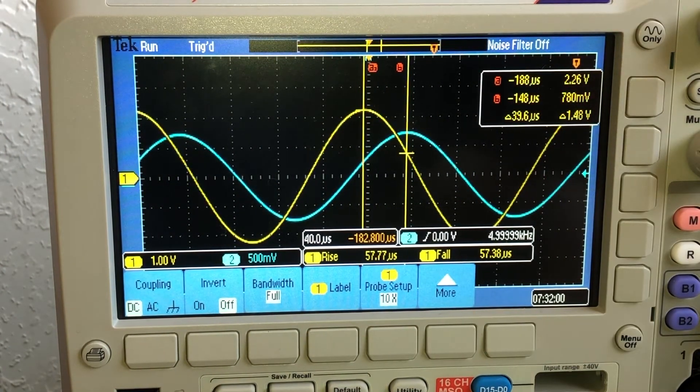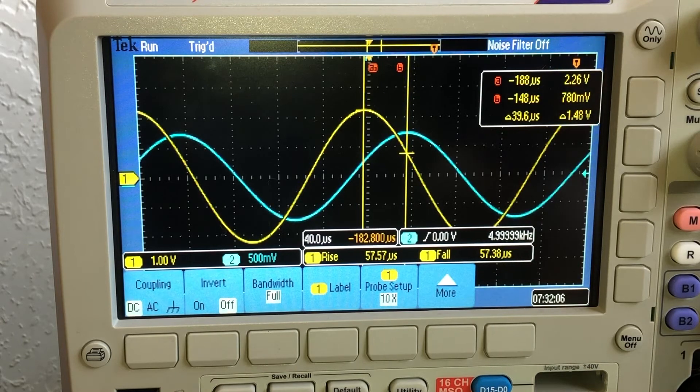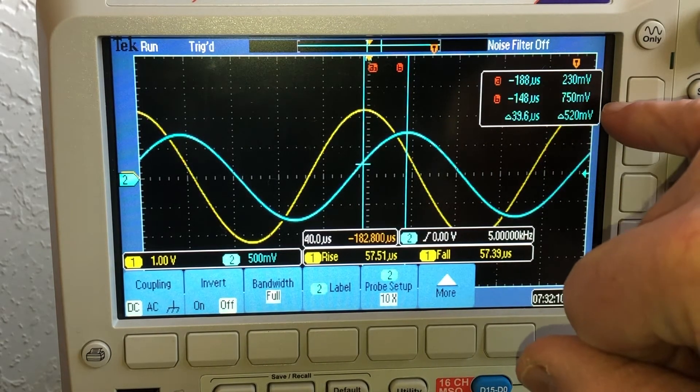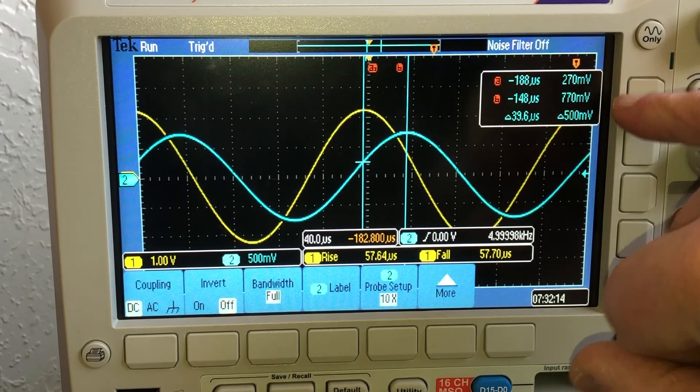At 5 kHz you can see they're getting more out of phase, and now I have 2.26 volts across all three, and then across just the resistor I have, that's bouncing around a little bit, 770 millivolts.